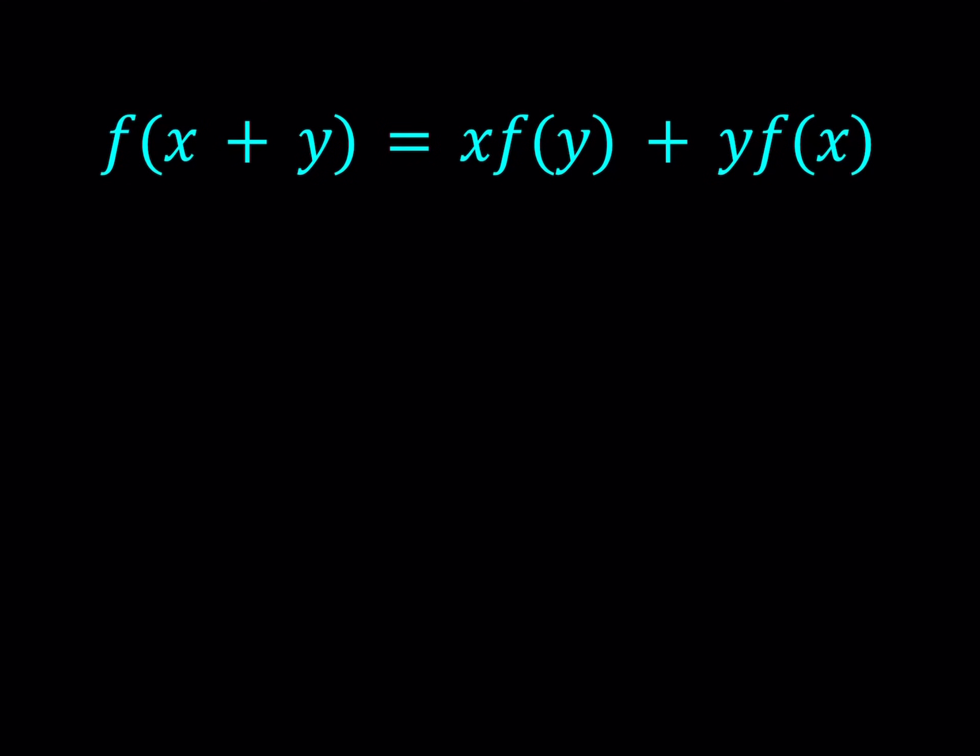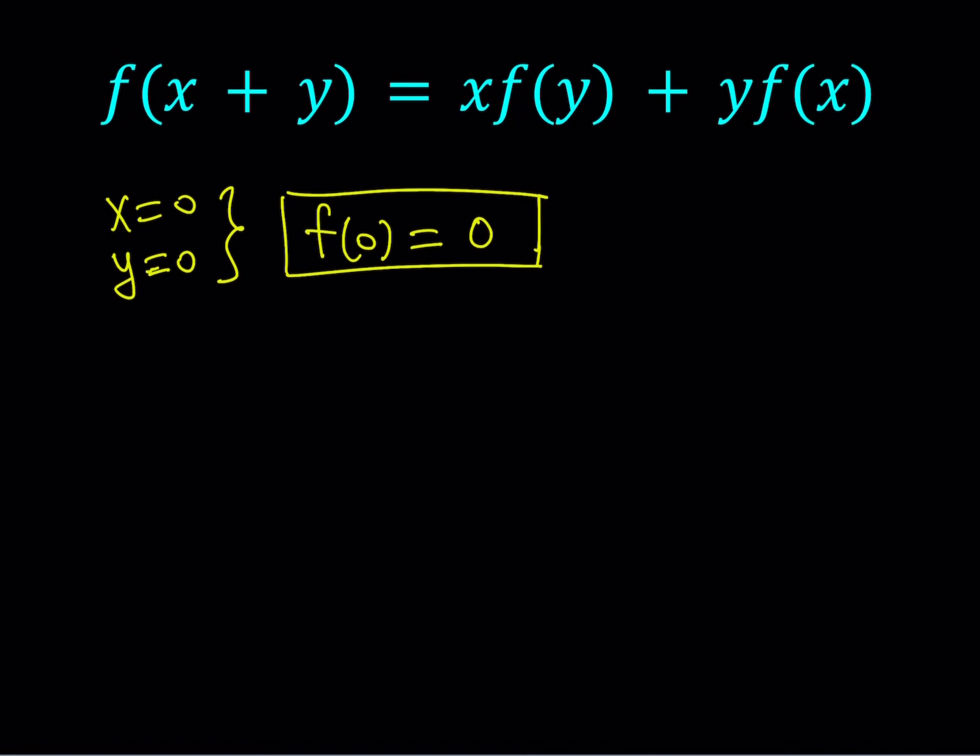Great. So now how do we solve this problem? I'm going to start by replacing x and y with 0 at the same time. You know that almost all the time gives us good things if you use some special values. From here we get f of 0. Now when you replace x and y both with 0 at the same time, then you're going to get f(0) equals 0, which is actually a very good thing while solving functional equations. So let's go ahead and save that information because we're going to use that.